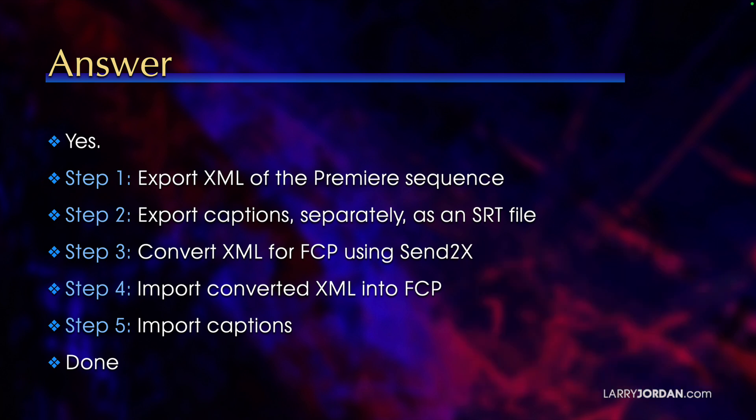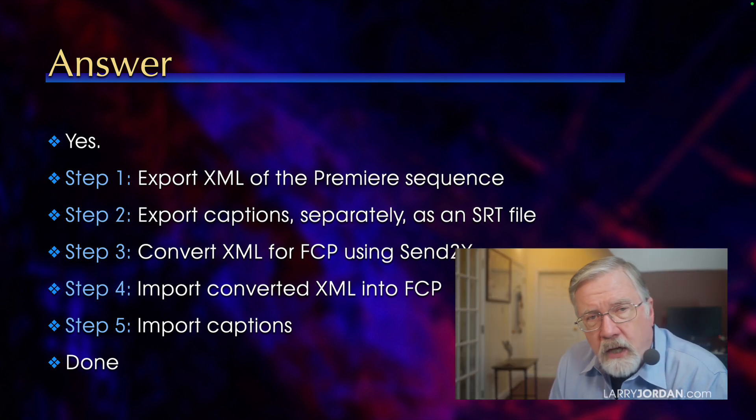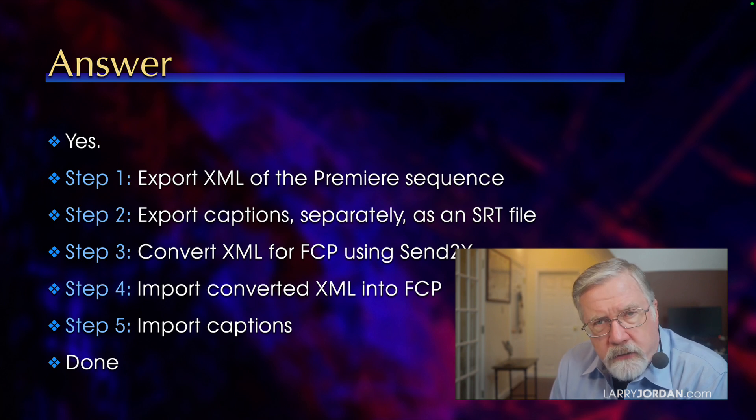First, you export an XML of the Premiere sequence. Then you export a caption file separately as an SRT file. Third, convert the XML for Final Cut using Send to X. Fourth, import the converted XML into Final Cut. And fifth, import the captions. You can end up with two files: one for your edit, and the other for your captions.